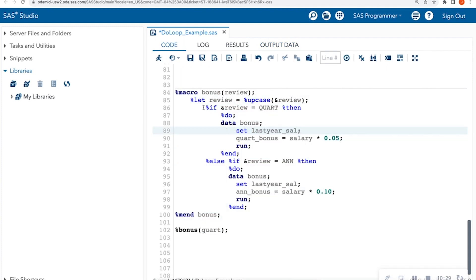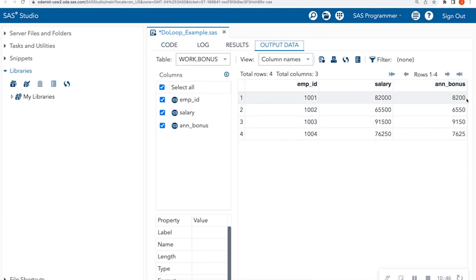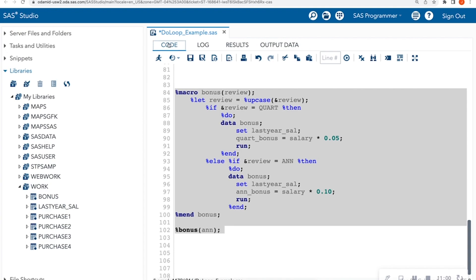So this is how we use that if logic within an actual macro program to give us two different types of data sets based off of conditions. So if I put AN in here for annual, I can run this little program. And now I get my annual bonus, which is 10%. So $8,200 is 10% of $82,000. Awesome. And I can always go back to my work library and see those bonus things that were printed off for me.